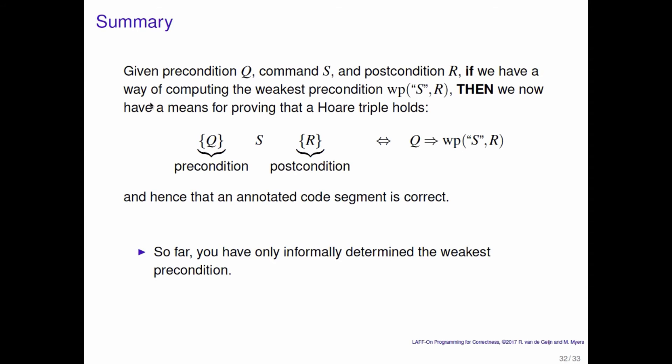So far you've only informally determined the weakest precondition. All we need to do is define the weakest precondition function for various commands in our pseudocode, and then we actually have the means for formally proving code segments correct. That's what we're going to spend the remainder of this particular week on.